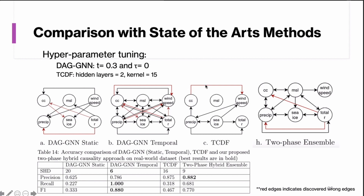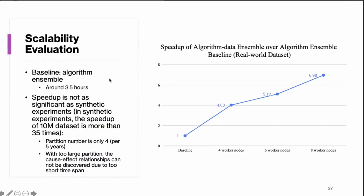Red edges indicate wrongly discovered edges in a given method. For scalability evaluation, with more worker nodes our methods run about seven times faster than baseline methods. For synthetic datasets the speedup is even better because we can use a larger partition number, while for the real-world dataset we partition the data to keep it meaningful for domain experts.